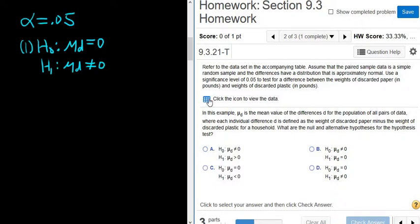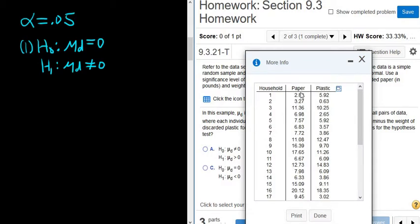If we click on this, you can see. So what are the d's? If you do paper minus plastic, so 2.8 minus 5.92, you get a number. If you do 3.27 minus 0.63, you get a number. All of those numbers are called d's.